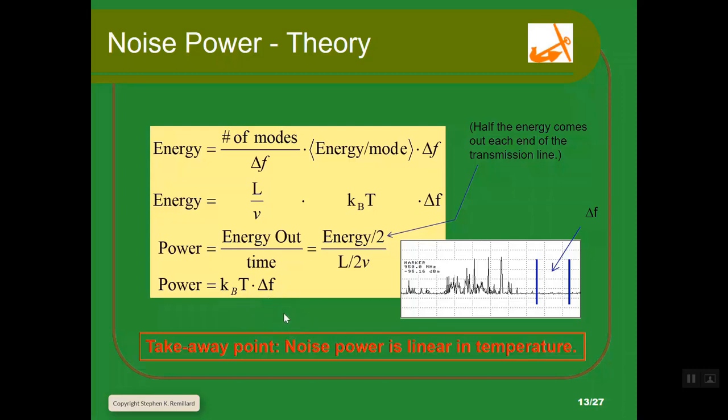It's linear in temperature. It's also linear in bandwidth. If you double the frequency range, you'll get twice as much power. If you change the temperature, you change the power. If you double the temperature, you'll double the power. Now we need to quantify that power in terms of measurable things. Let's go back to our spectrum analyzer.